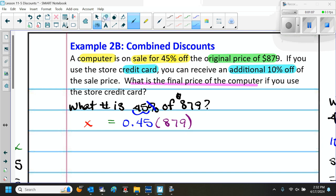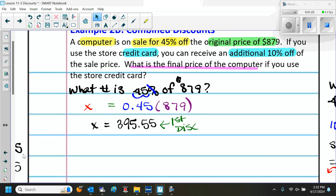When we do that, we get our first discount which is $395.55. So that first discount, then we take that and we subtract it from the $879. When we subtract $879 minus the discount, we get $483.45.